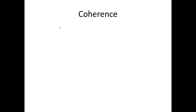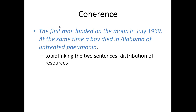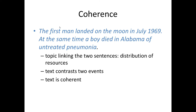Now look at the following: 'The first man landed on the moon in July 1969. At the same time, a boy died in Alabama of untreated pneumonia.' At first sight, these two sentences may not seem to have anything to do with each other. But there is a topic that links the two, namely the distribution of resources. The text contrasts two events where one cost an enormous amount of resources, whereas the other would have cost very little to prevent. So this is a coherent text because it is about a particular topic.